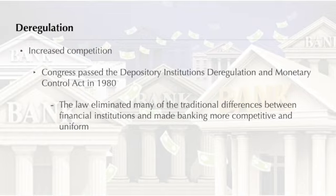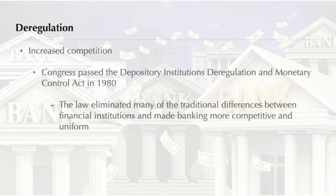Suppose you decide to buy a car. Traditionally, you would have arranged a loan from an S&L or a credit union. Deregulation has allowed banks to offer interest rates comparable to those available from other institutions, so you have many more loan offers from which to choose. Similarly, traveler's checks were once only issued at banks; today, however, vacationers have the convenience of buying traveler's checks at almost any financial institution.